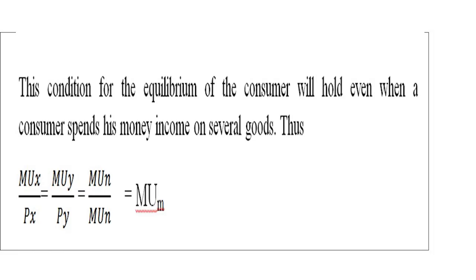This equilibrium condition holds even when a consumer spends income on several goods, such that MU(X)/P(X) = MU(Y)/P(Y) = ... = MU(N)/P(N) = MU(M). In summary, the law of equi-marginal utility states that a consumer distributes limited income among goods so that the utility derived from the last rupee spent on each good is equal. This concludes our session — bye and happy learning!